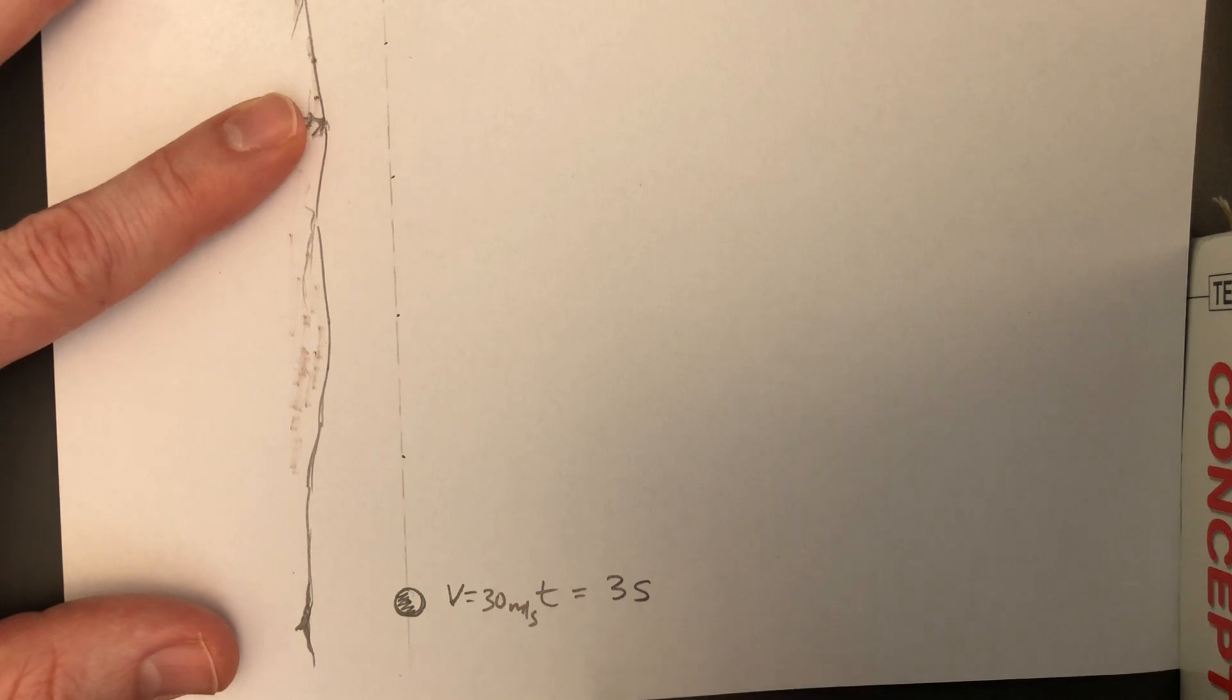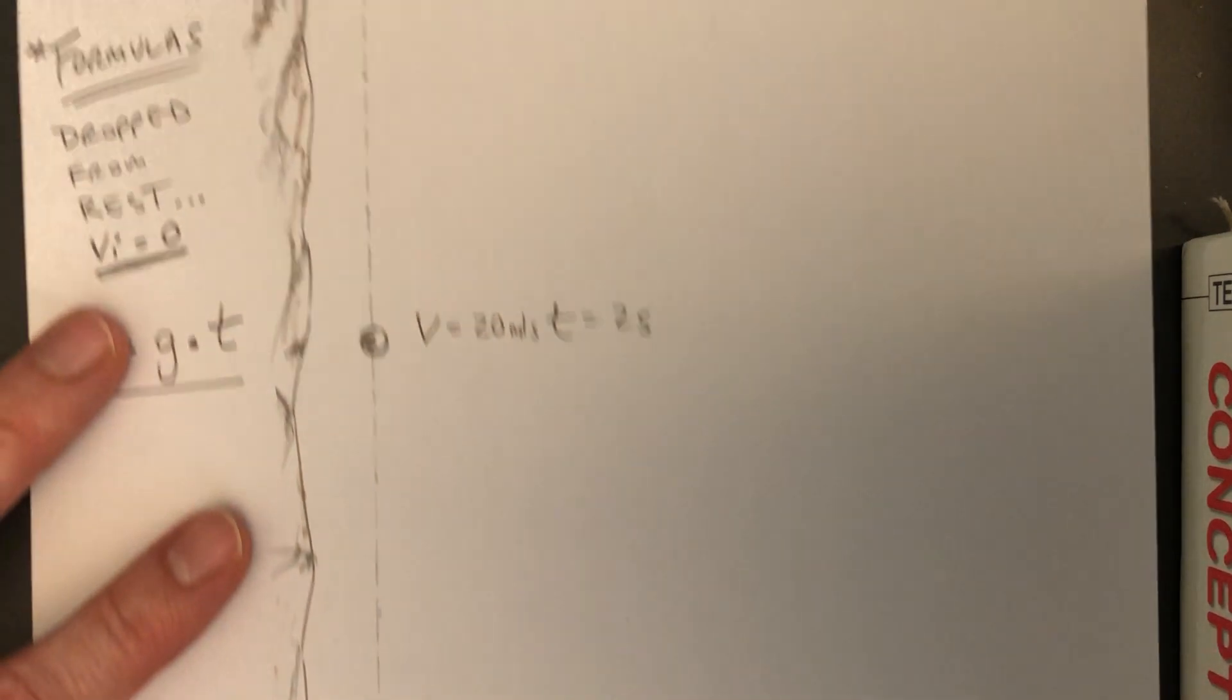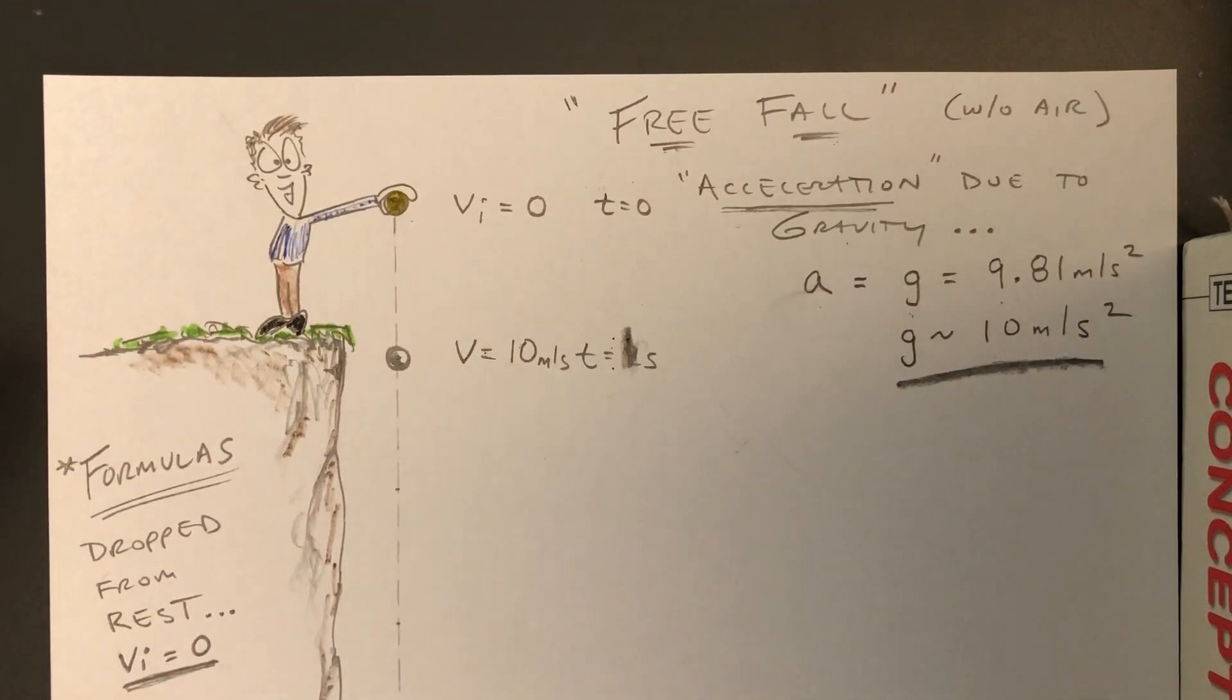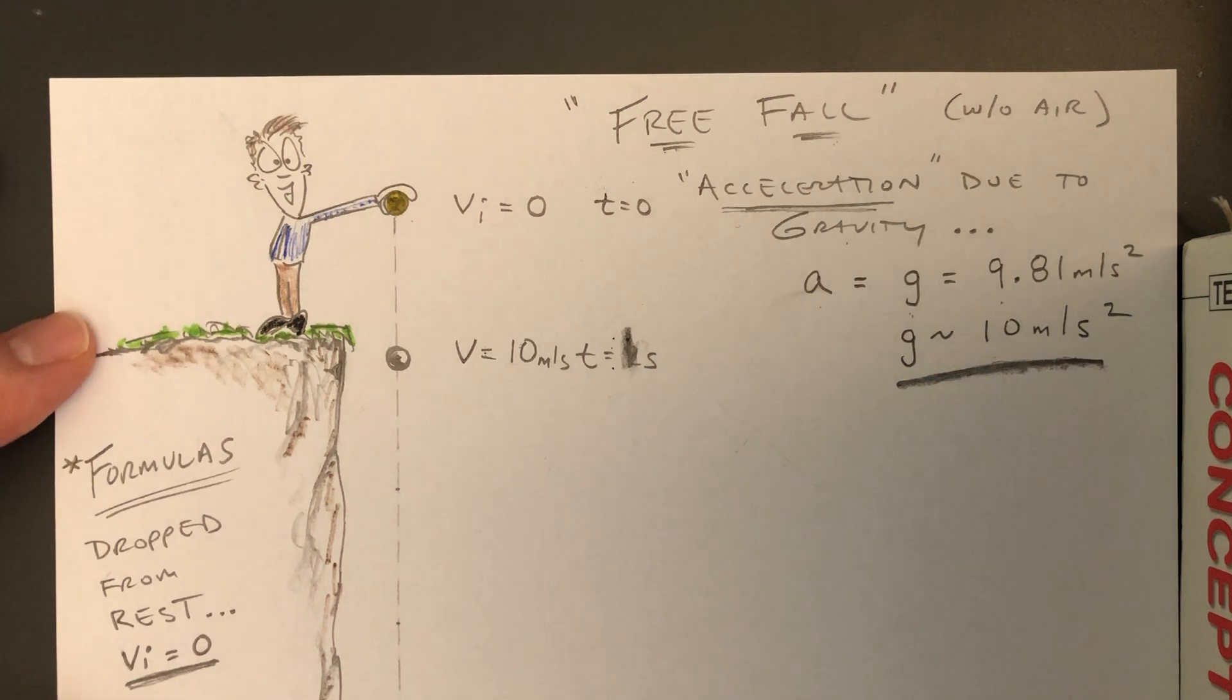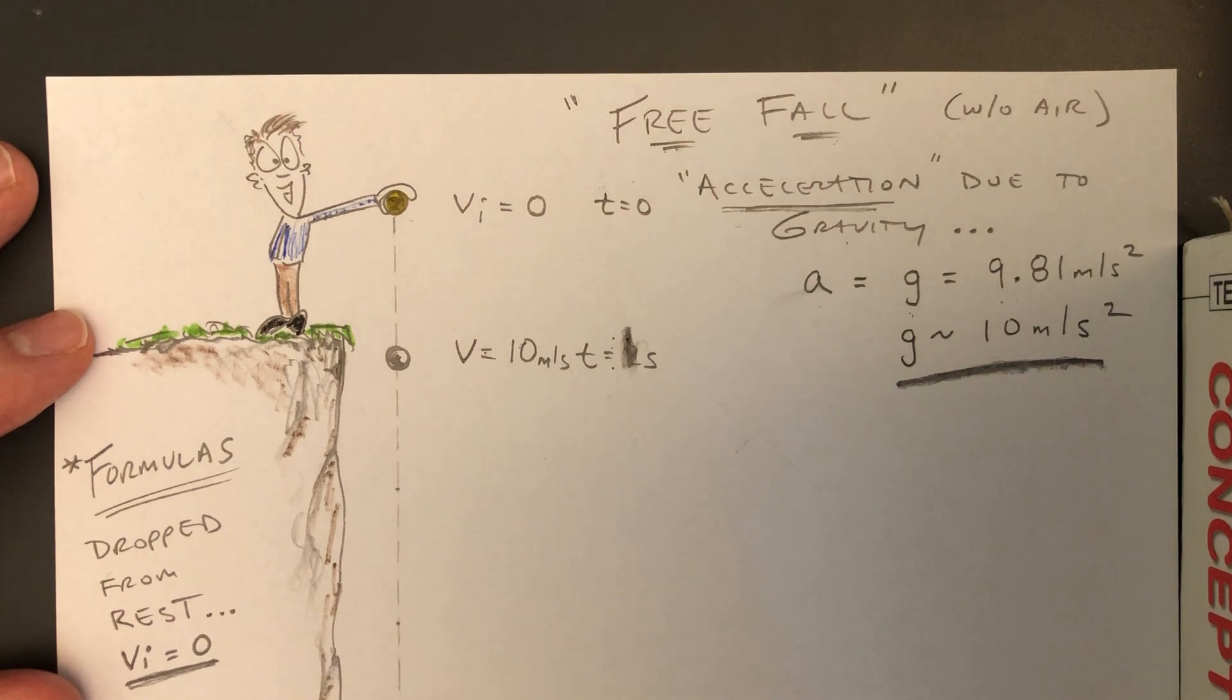Four seconds, 40. Five seconds, 50. So the rate at which the velocity increases by would be 10 meters per second per second. That one is typically very easy for students to understand.